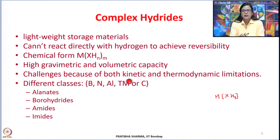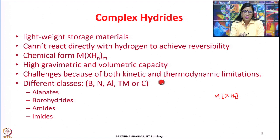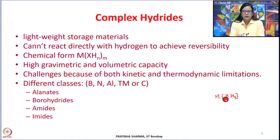Complex hydrides have sluggish kinetics; at the same time, the temperatures at which they desorb hydrogen are appreciably higher. Reversibility of these complex hydrides is another major challenge — most are found to be irreversible. The classes of complex hydrides can be categorized into alanates, borohydrides, amides, or imides. Here, X could be Al, boron, nitrogen, or even transition metal or carbon compounds.